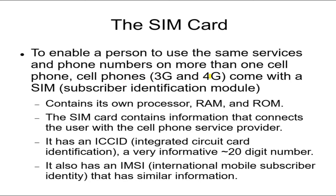3G and 4G phones come with a SIM card. SIM stands for Subscribing Identification Module. These SIM cards are kind of complicated — they contain their own processor, their own ROM, and their own way of dealing with RAM. The SIM card contains information that connects the user with the cell phone provider and can also identify the cell phone and the one who bought the SIM card.